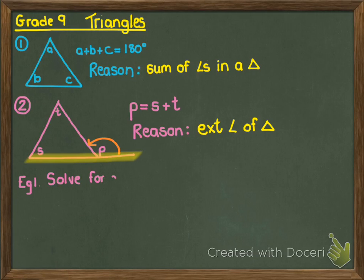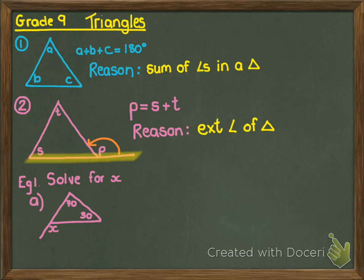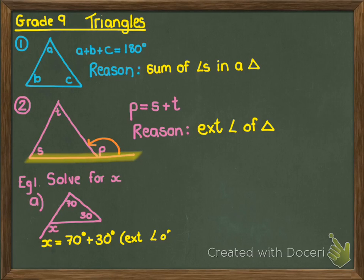Let's look at an example. The first question says solve for X. We have a triangle with an exterior angle X, and the two angles inside the triangle on the opposite side are 70 and 30. So X equals 70 plus 30, and my reason is exterior angle of triangle, which means X must be 100 degrees.